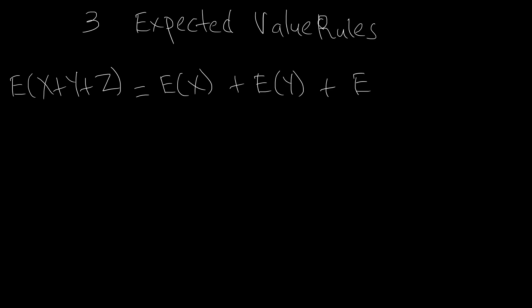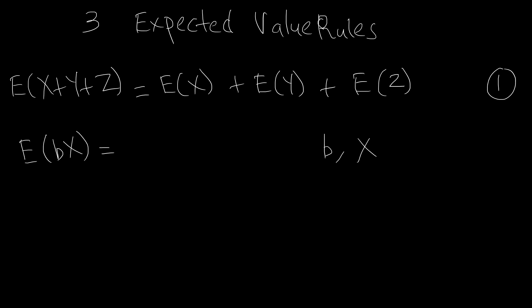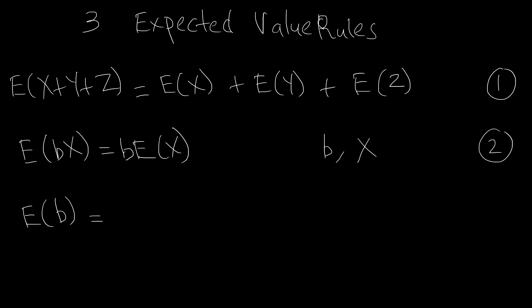That's rule number one. Rule number two says that if you have a constant B and a random variable X, then if you multiply a random variable by a constant, its expected value is multiplied by that same constant. And according to the third rule, the expected value of a constant — let's say B — is simply the constant itself.